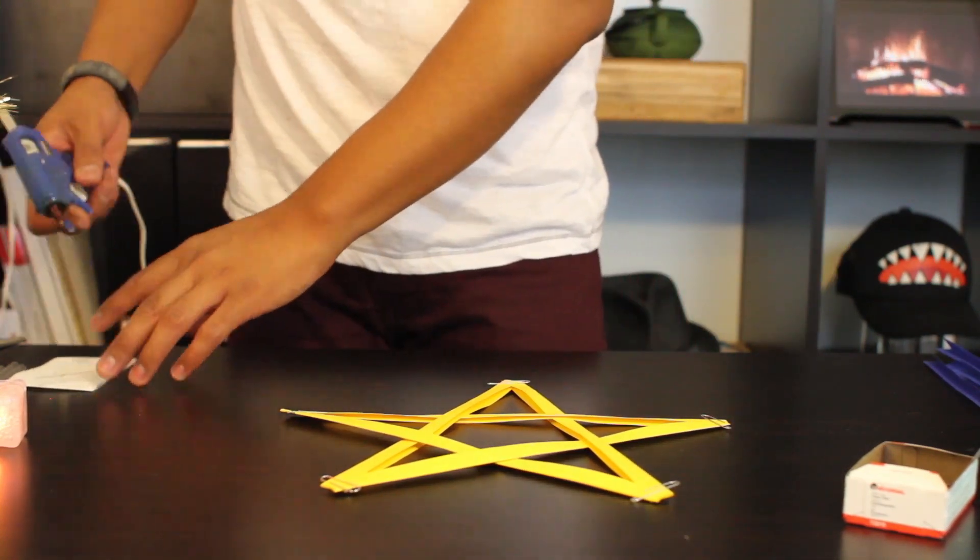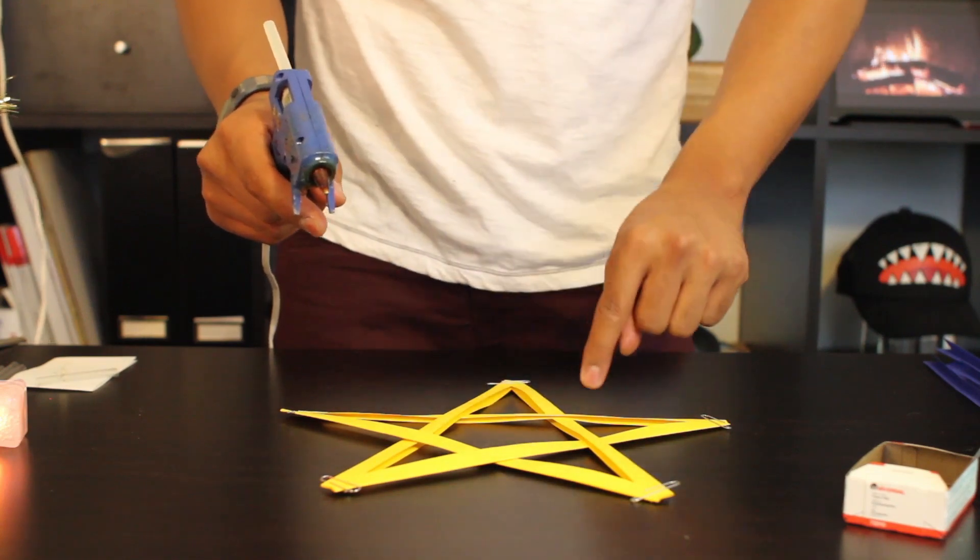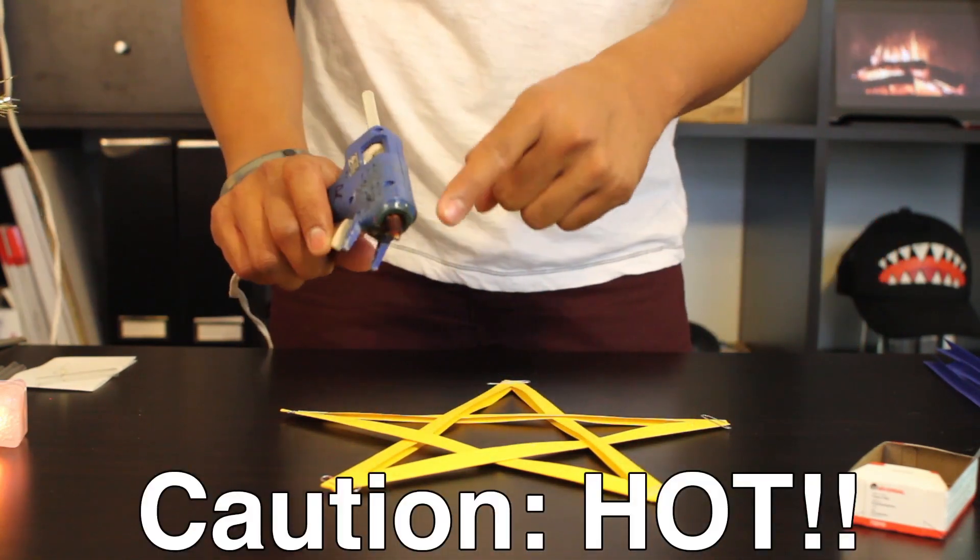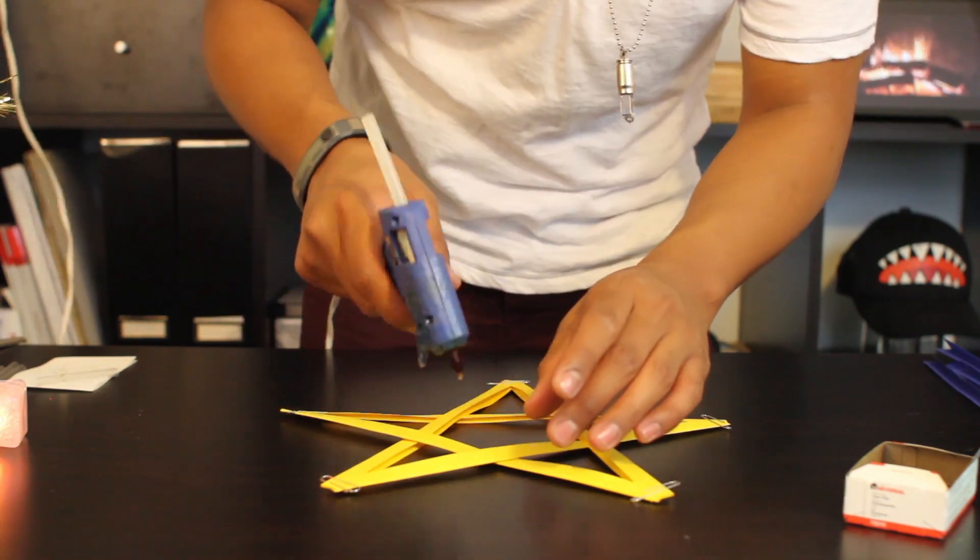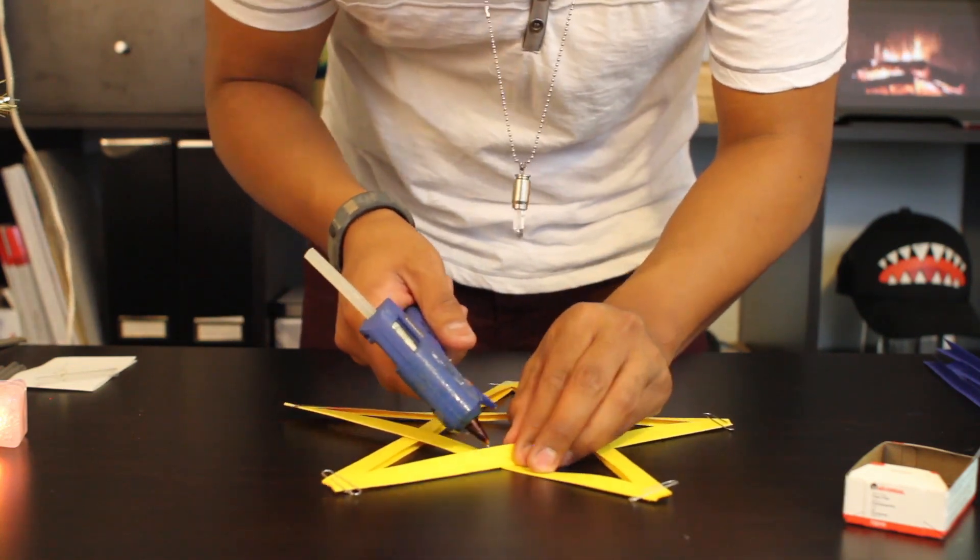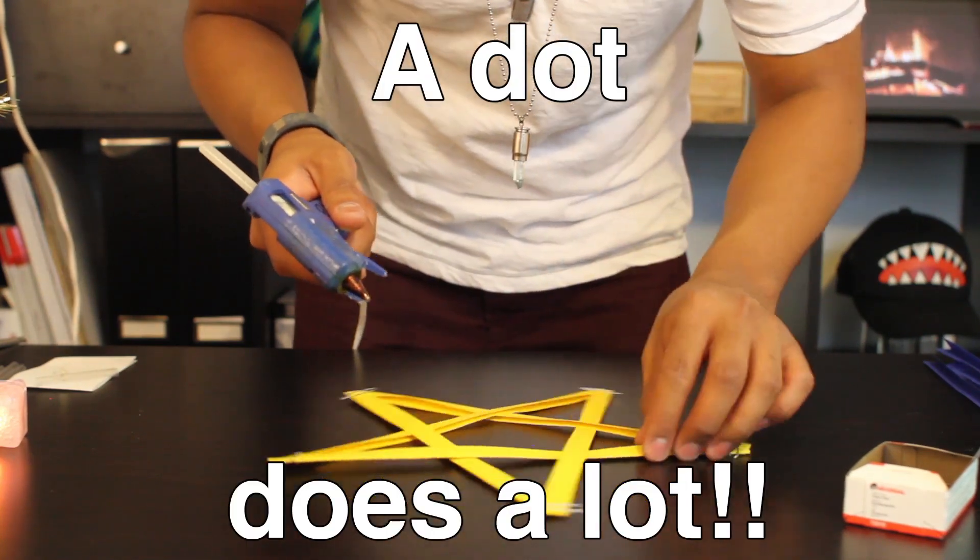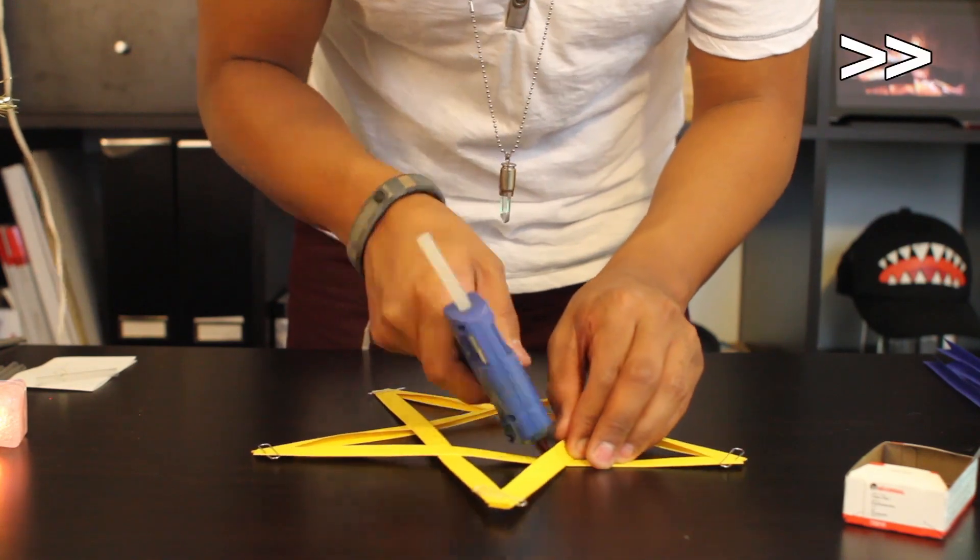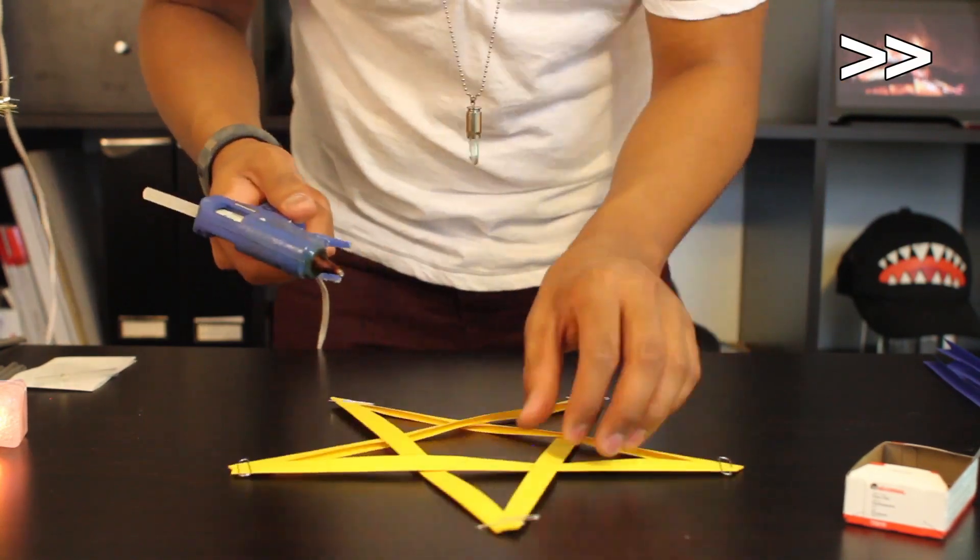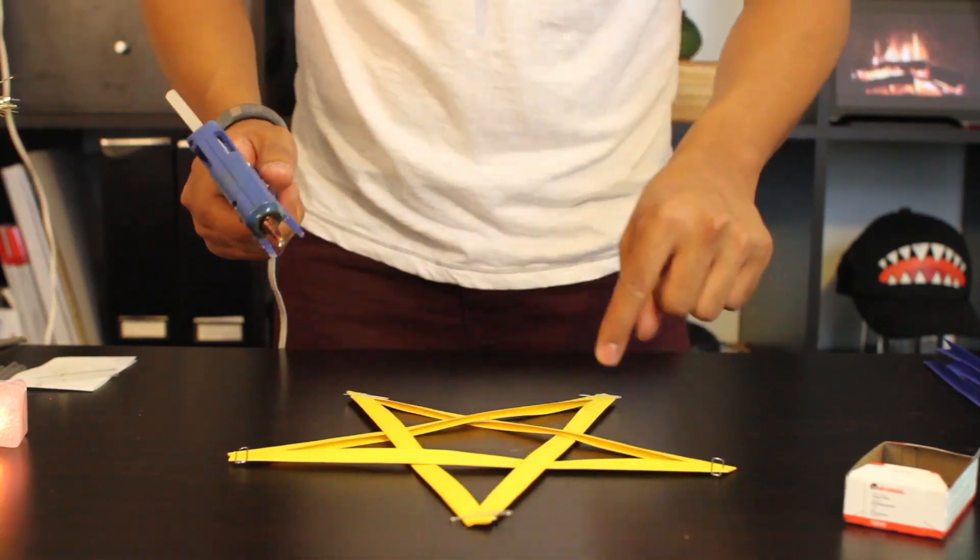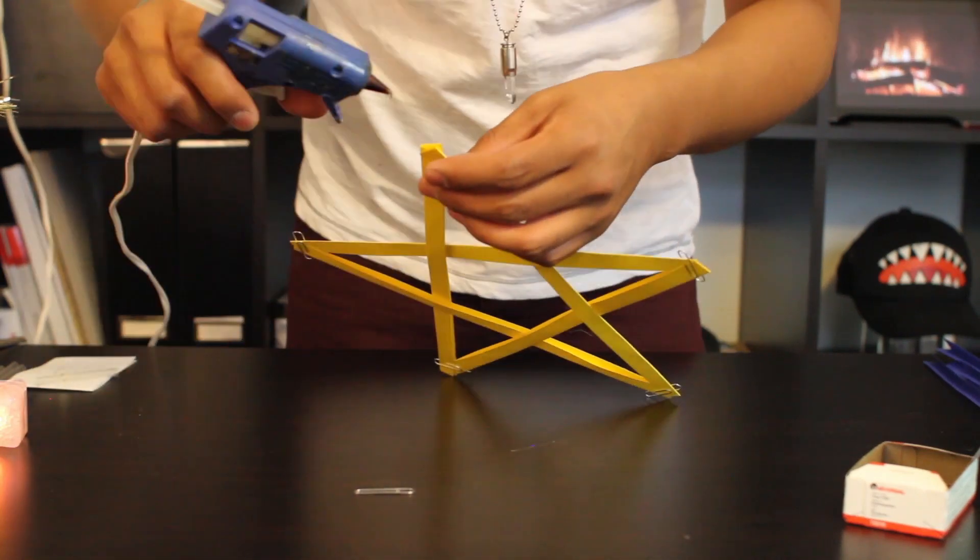take your hot glue gun and glue all the contact points. Remember, never touch the tip because it is very hot. When gluing your star, a dot does a lot. Glue the inside and the outside contact points of your star.